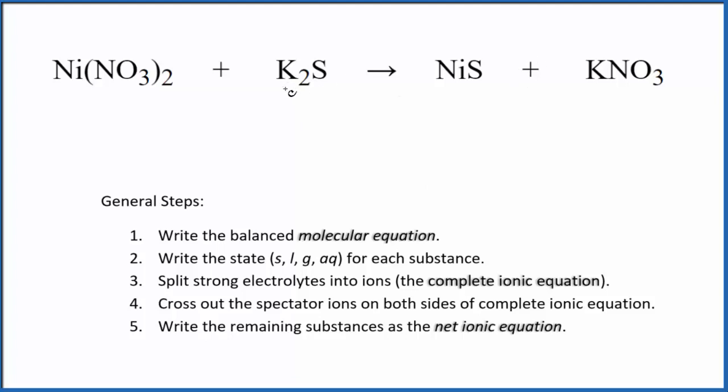So when I look at this, I see immediately I have two potassiums here and one here, so I'm going to put my coefficient of 2 here. That balances the potassiums. Now I have two of these nitrates. That's good. Two nitrates here, nickel, nickel, and then sulfur and sulfur. So this is the balanced molecular equation.